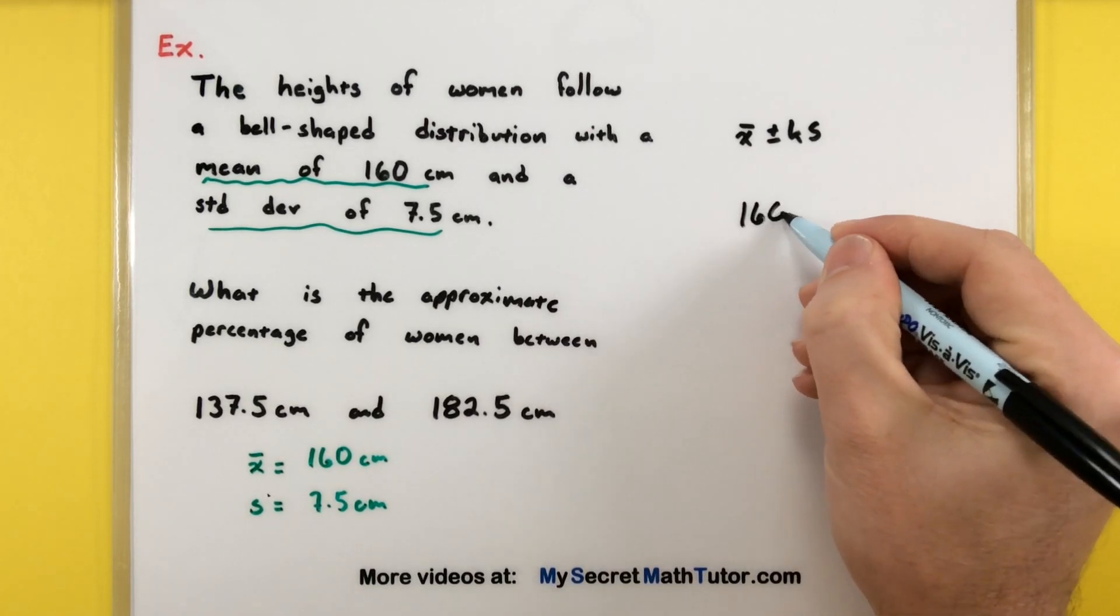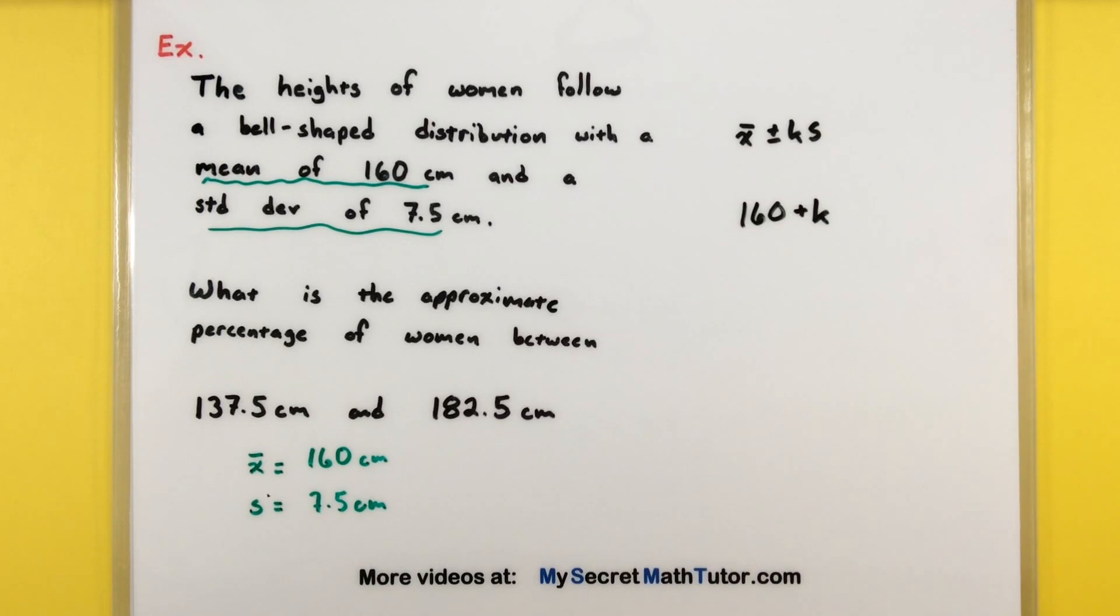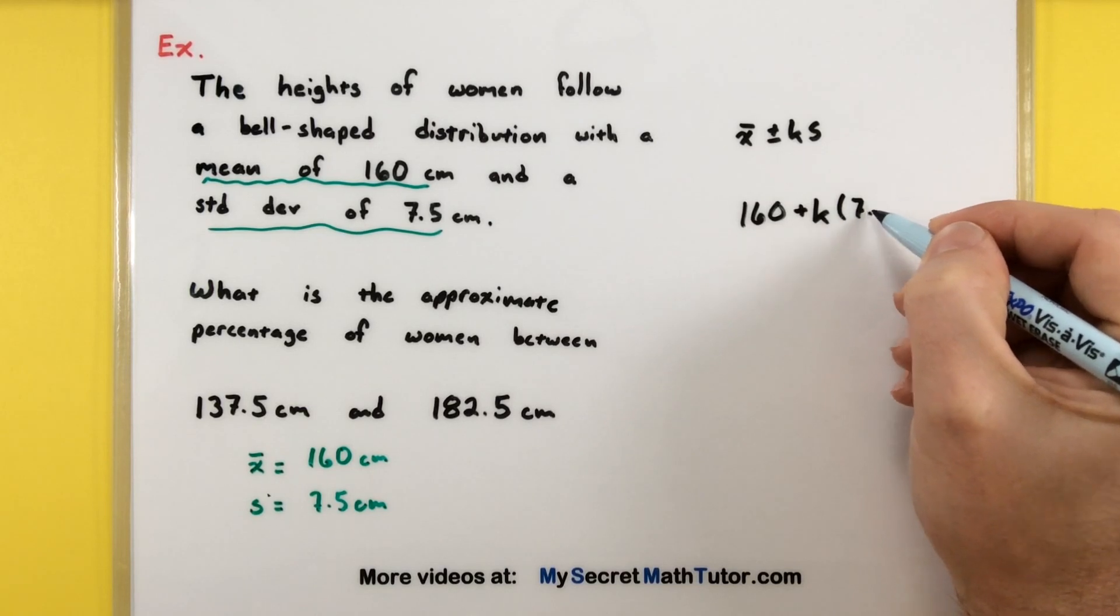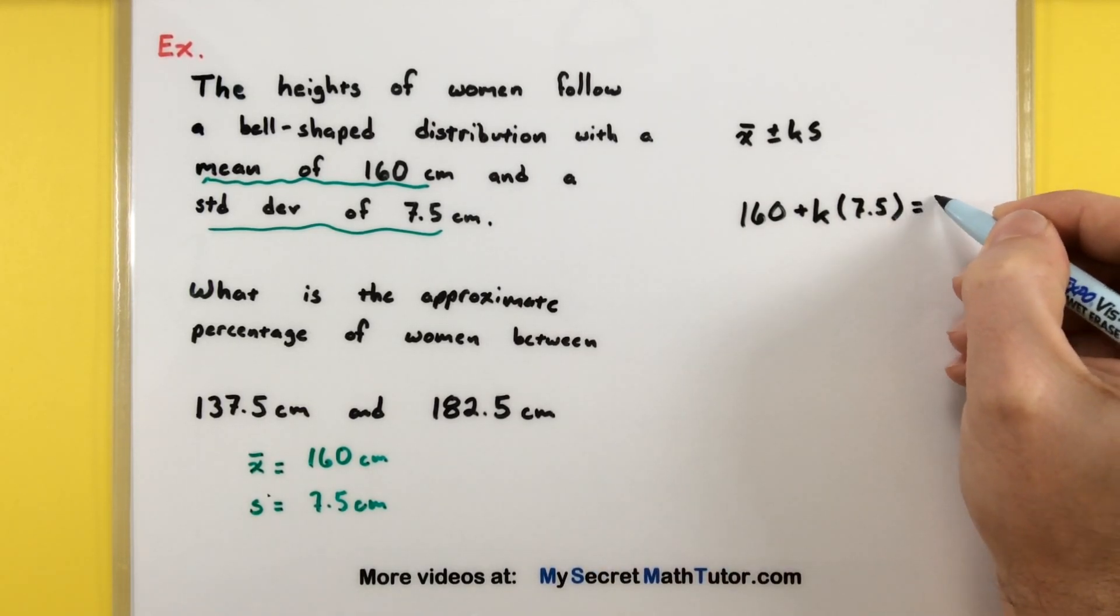That's the mean, 160. We don't know how many standard deviations we are, so we'll just leave that as k and multiply that by the standard deviation of 7.5. Since we're adding, this should equal the upper number, 182.5.